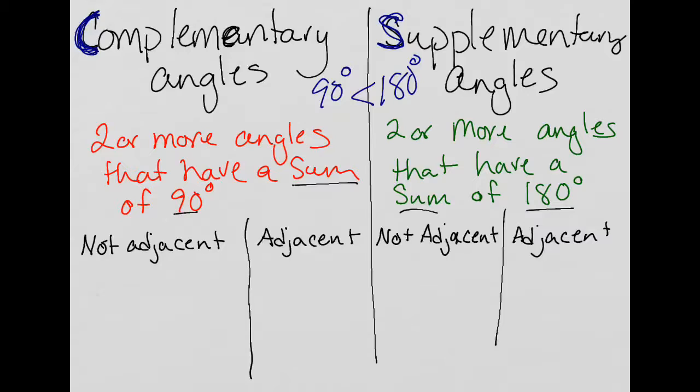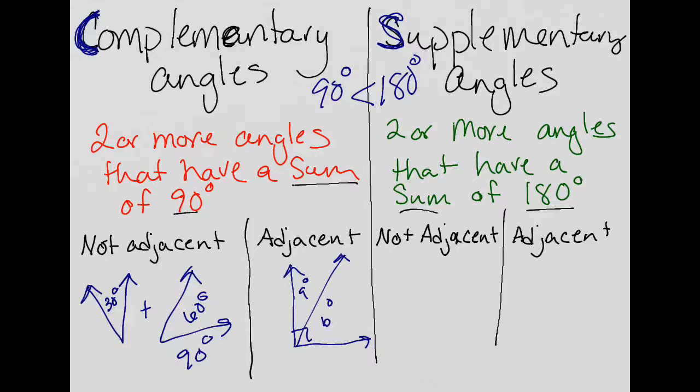For both complementary and supplementary angles, they can be non-adjacent. So I could say these two angles here measure 30 degrees and 60 degrees. Well, their sum, if I add them, is 90. So those would be non-adjacent complementary. Or I could have adjacent complementary angles, like this one, angle A and angle B. I know that by this right angle symbol, that if I add these two angles up, I'm going to get 90 degrees.